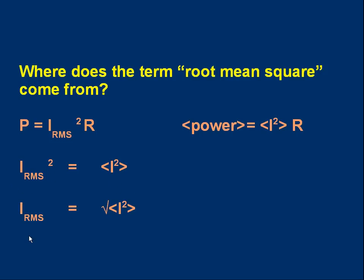So I_rms is the square root of the average value of I² — that's where 'root mean square' comes from. 'Mean' is another word for 'average', so it's the square root of the mean of the square of the current: root mean square current.